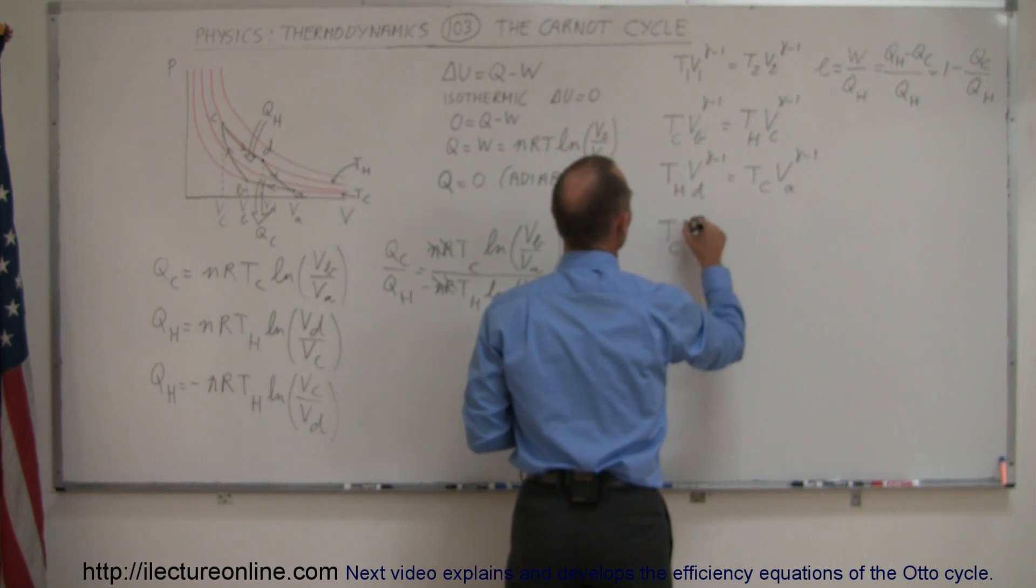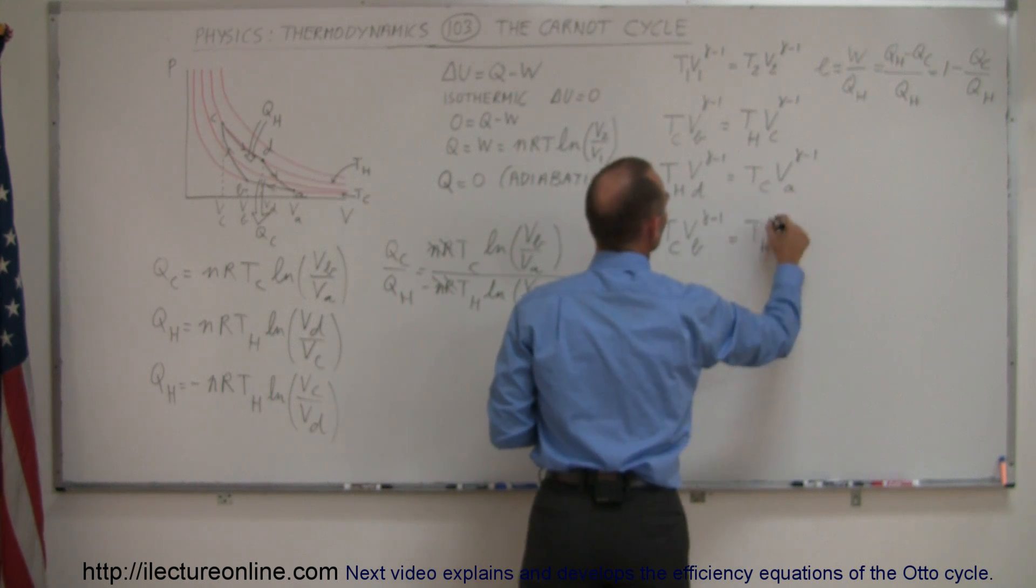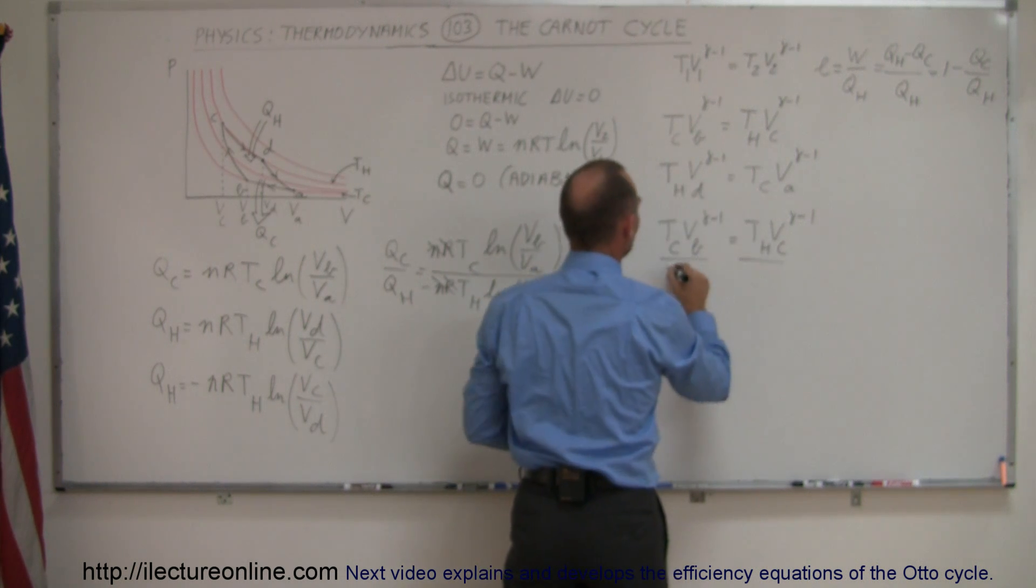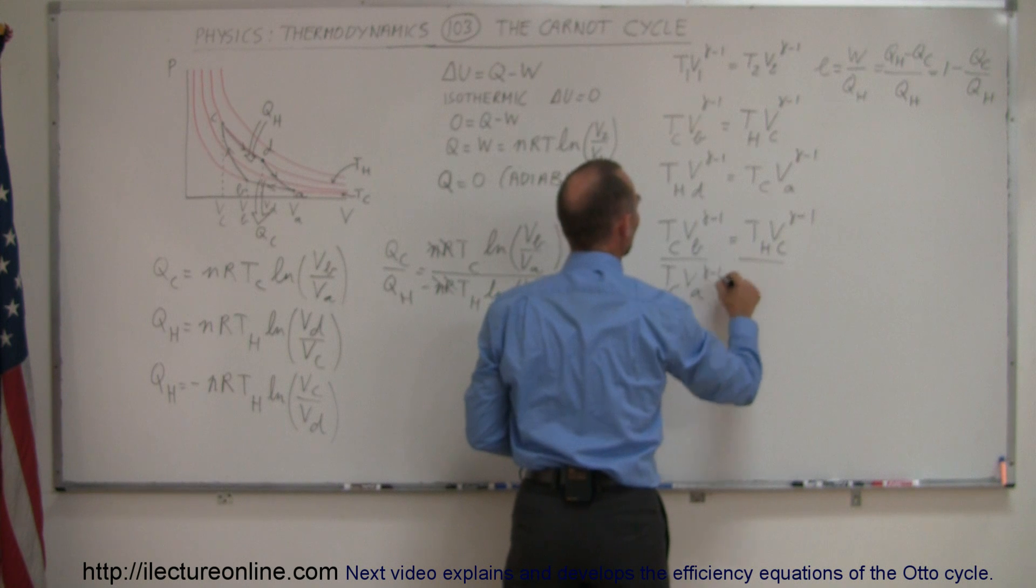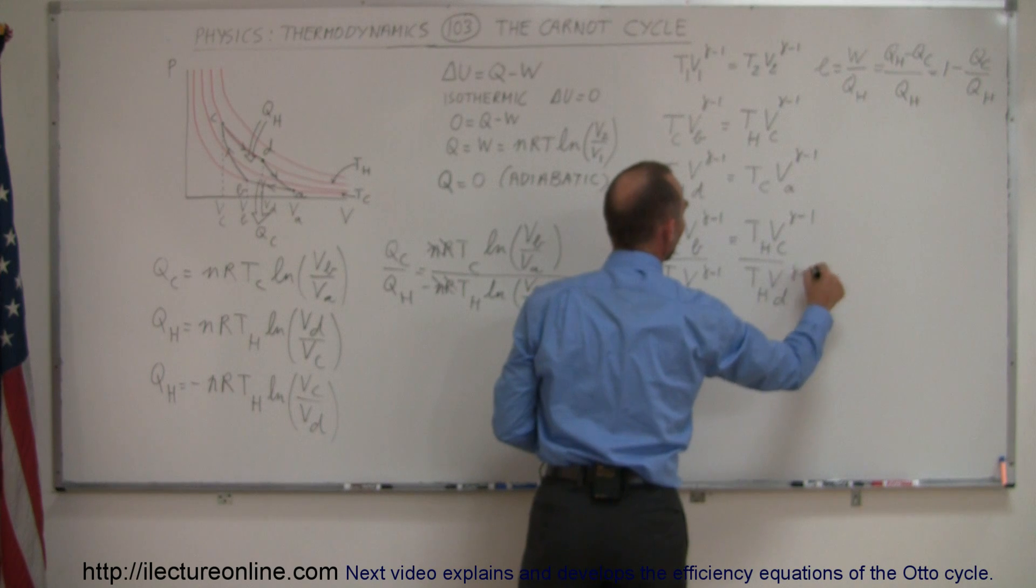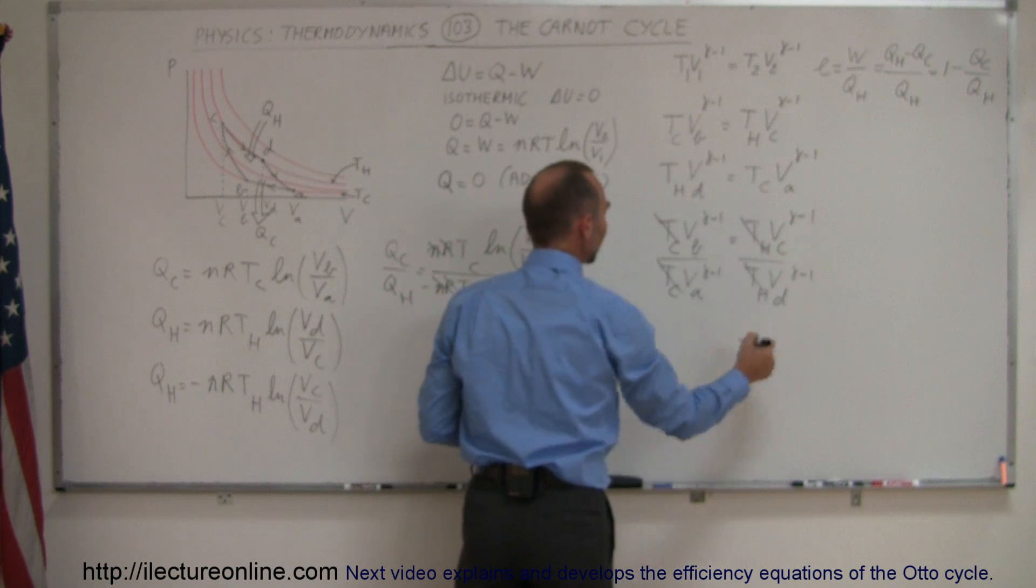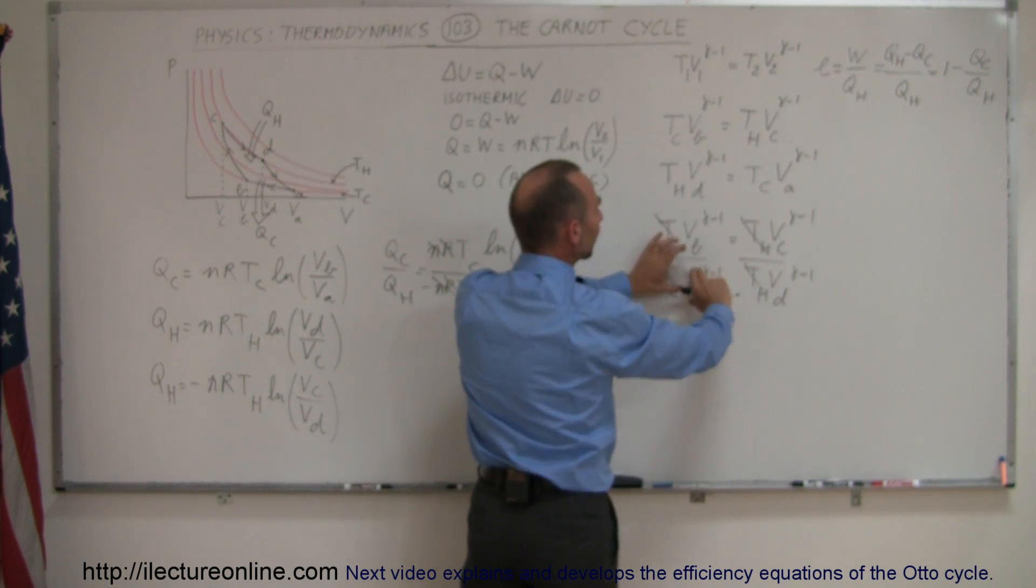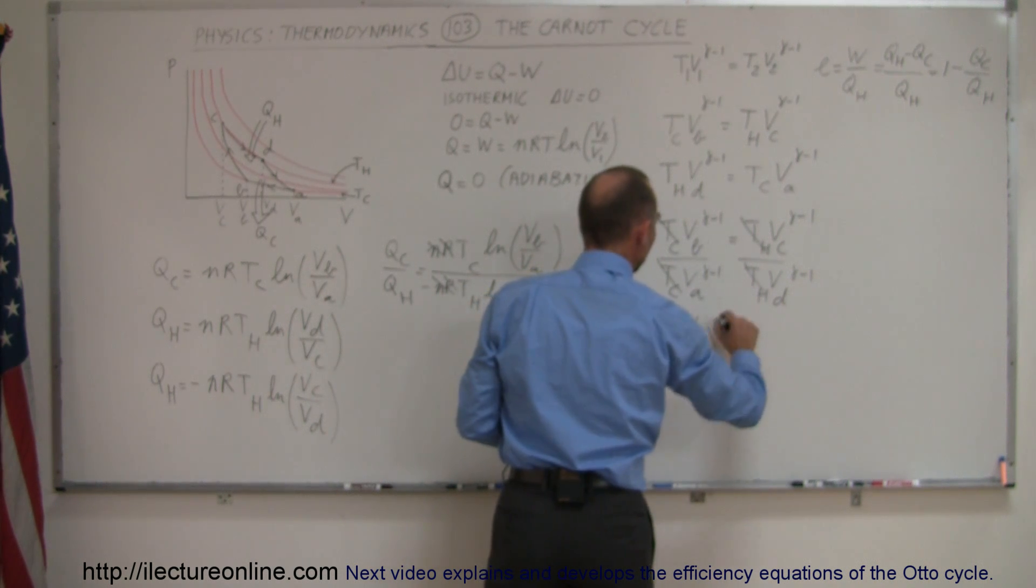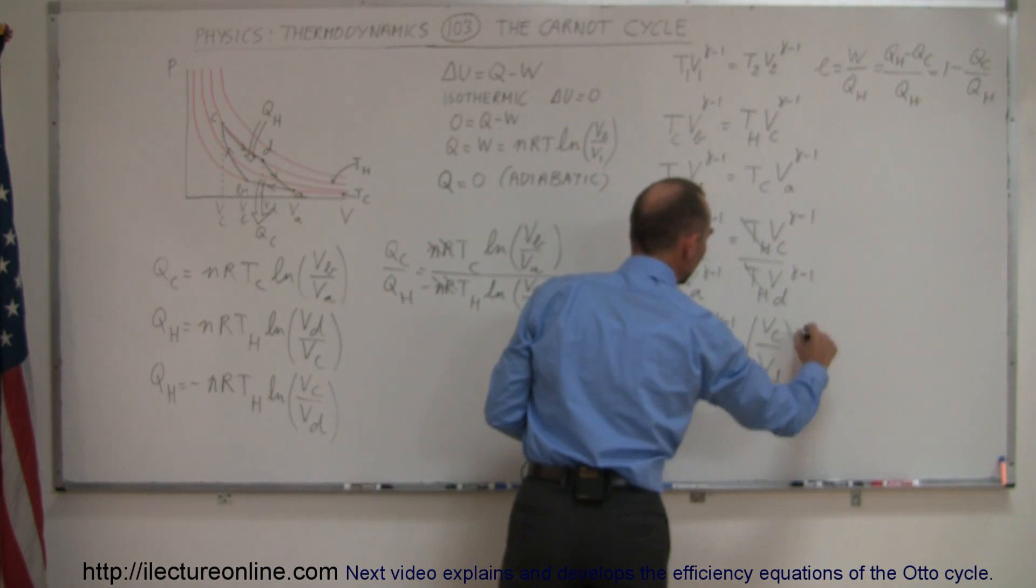So we're going to take T_c V_b to the gamma minus 1, and set equal to T_h times V_c to the gamma minus 1, and we divide that by this equation but turn around: I get T_c V_a to the gamma minus 1, and on this side I get T_h times V_d to the gamma minus 1. Notice what we've done here. You can see that the T_c's cancel out, and the T_h's cancel out, and then you combine the V_b over V_a and V_c over V_d, so we can write that V_b over V_a to the gamma minus 1 equals V_c divided by V_d to the gamma minus 1.